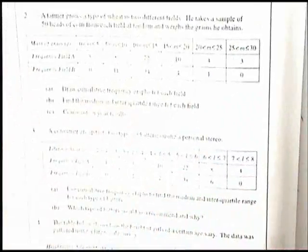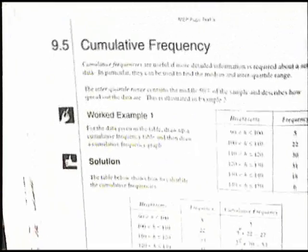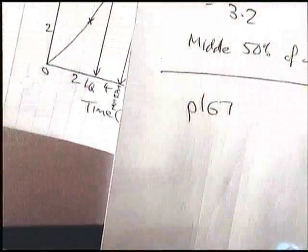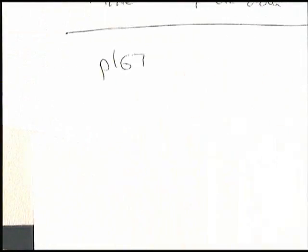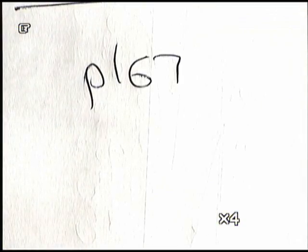So everything else should be fairly self-explanatory. If you want to look through another example, there are examples in the book, starting on page 164, and you can read that through. But right now, can you find page 167, and work through the exercises you find there?